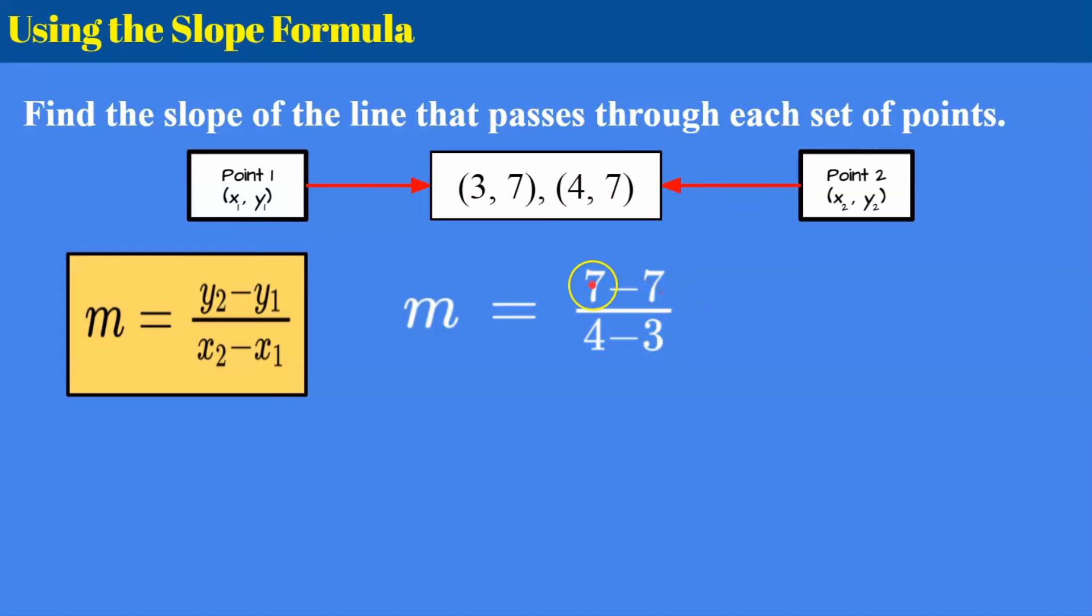These are interchangeable. You could have done 7 minus 7 over 3 minus 4. We're going to get the same answer. As long as you identify one point to be point 1 and point 2 it will all work out. So 7 subtract 7 is 0 and 4 subtract 3 is 1.